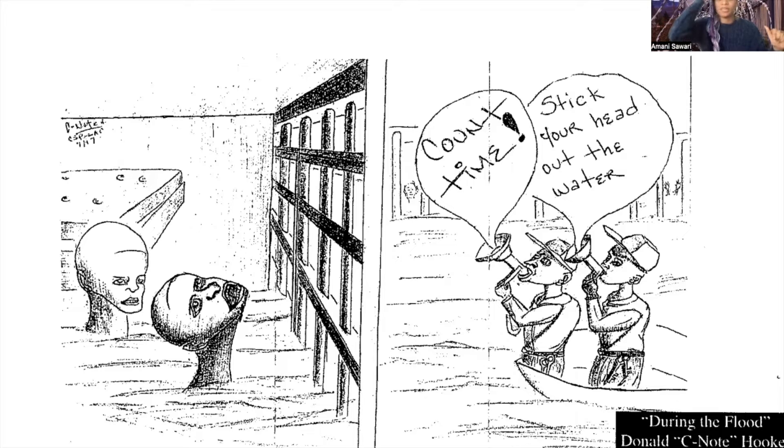Count time is a period of time where staff go around the entire facility and they literally do a head count. They do a head count multiple times a day in order to report back to higher corrections officials that yes, the amount of people that we had in the facility at the beginning of the day is the same amount of people that we have at noontime and the same amount of people that we have at the end of the day. Because they do not want to be responsible for not having the number of heads that they had yesterday unless there was a scheduled release.